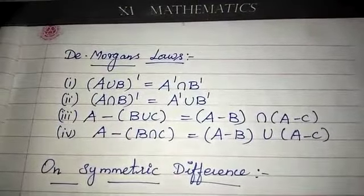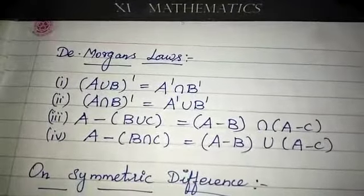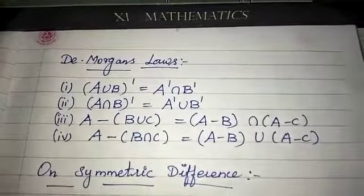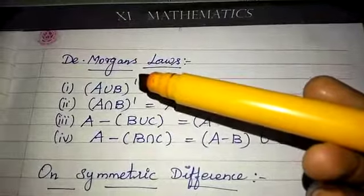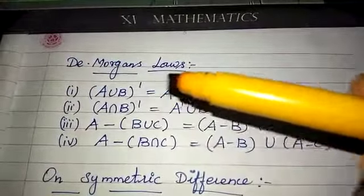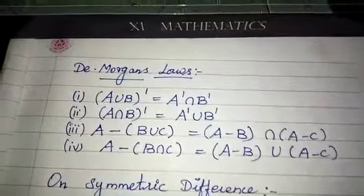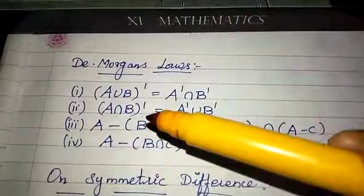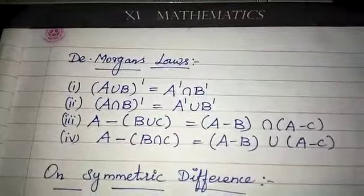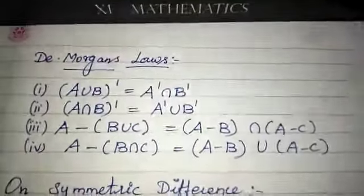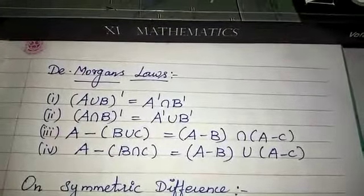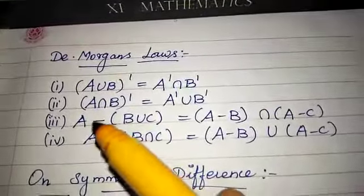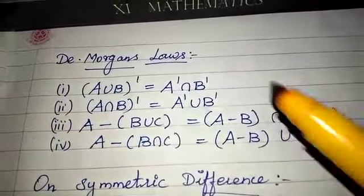De Morgan's laws using complement (dash notation): (A union B) dash equals A dash intersection B dash. And (A intersection B) dash equals A dash union B dash. The dash symbol represents the complement.